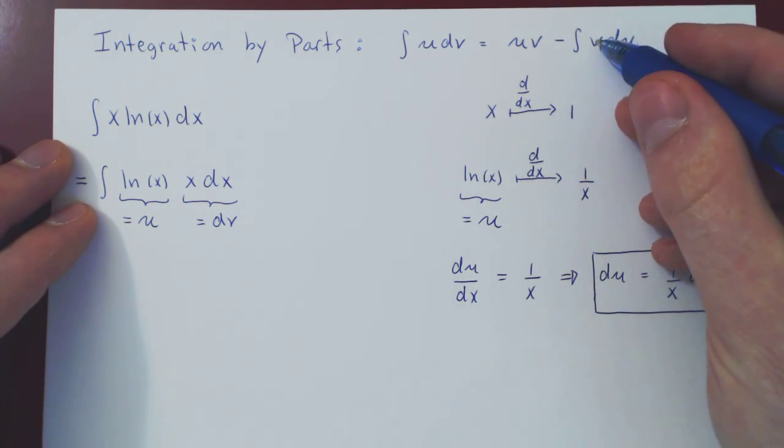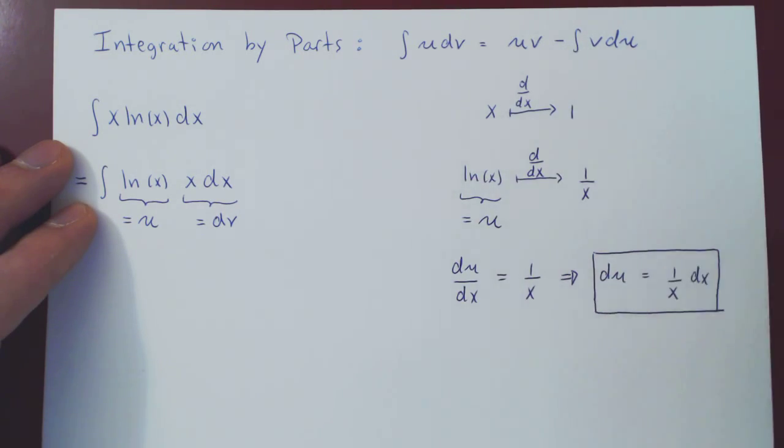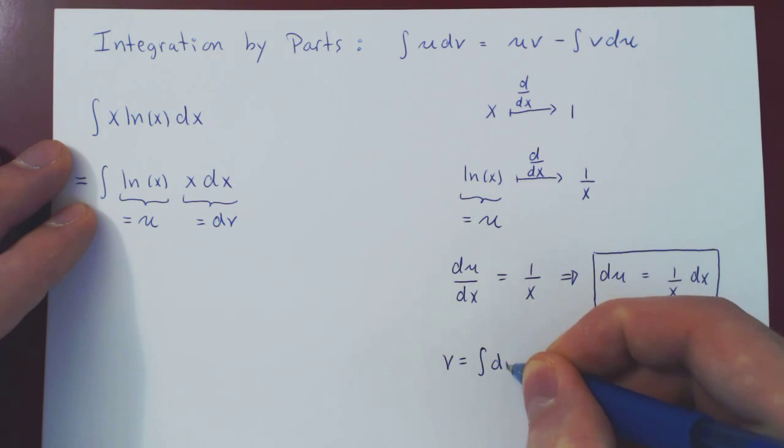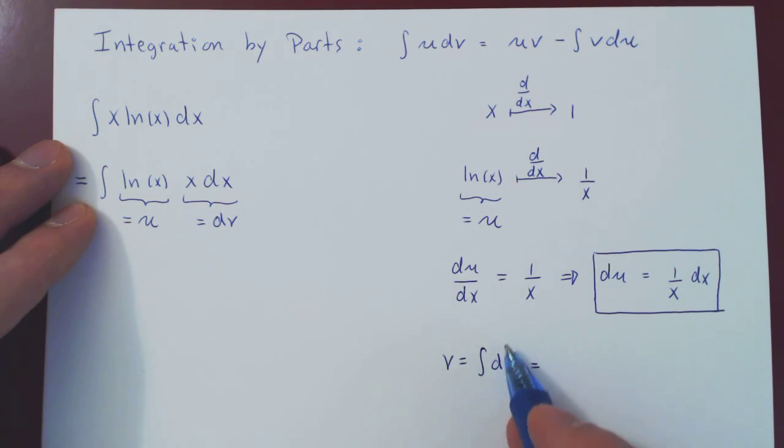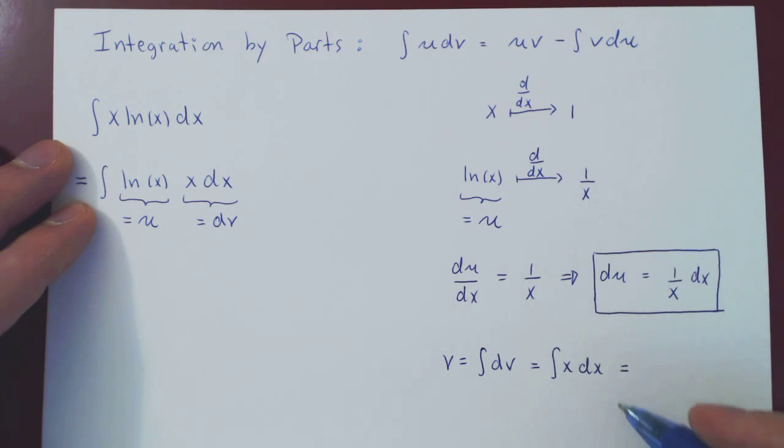Well, we need our v. We have dv. We want to go from dv to v. But of course, v is quite simply the integral of dv. dv being x dx, so we can replace integral dv by x dx. And of course, the integral of x dx from the power rule is x squared over 2.